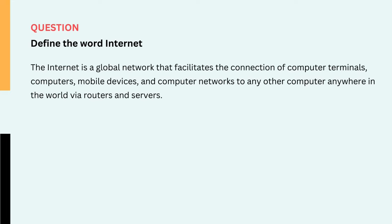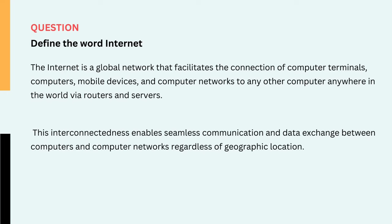Question: Define the word internet. The internet is a global network that facilitates the connection of computer terminals, computers, mobile devices, and computer networks to any other computer anywhere in the world via routers and servers. This interconnectedness enables seamless communication and data exchange between computers and computer networks regardless of geographic location.